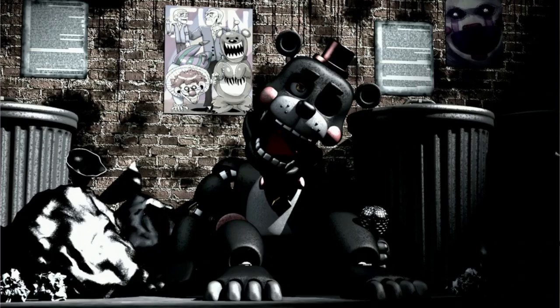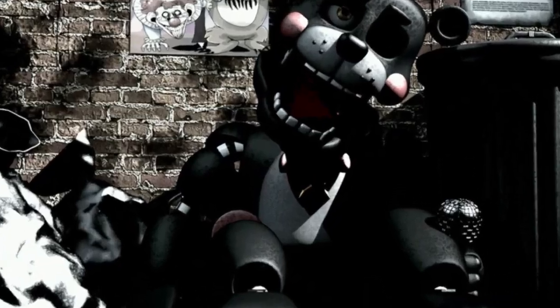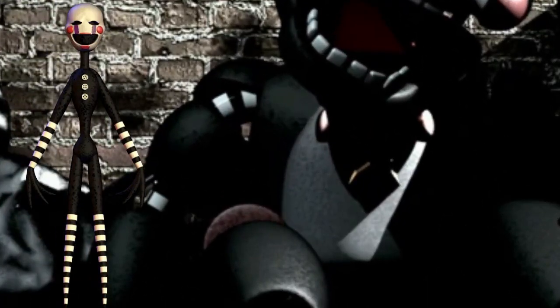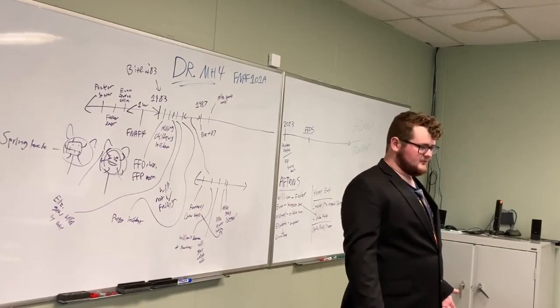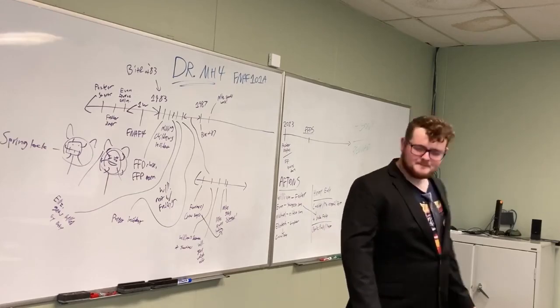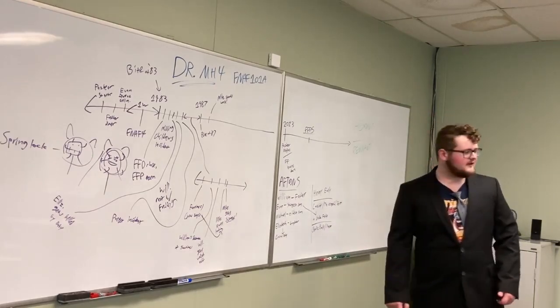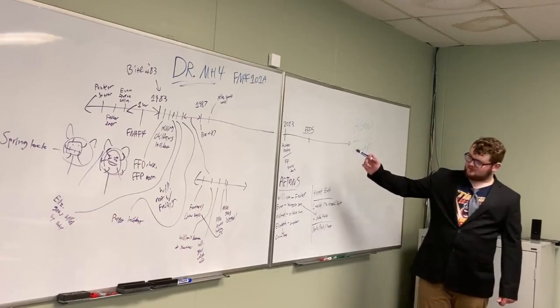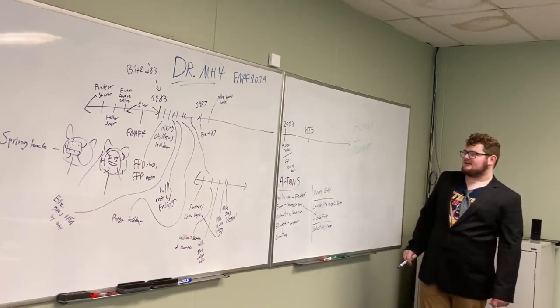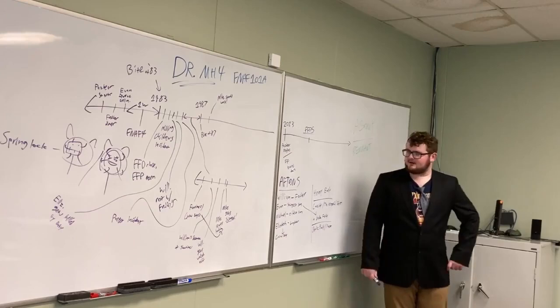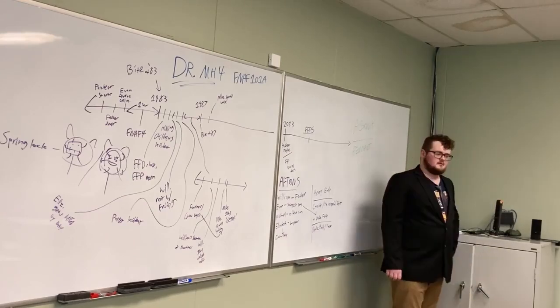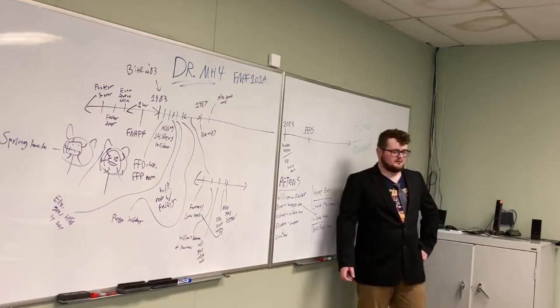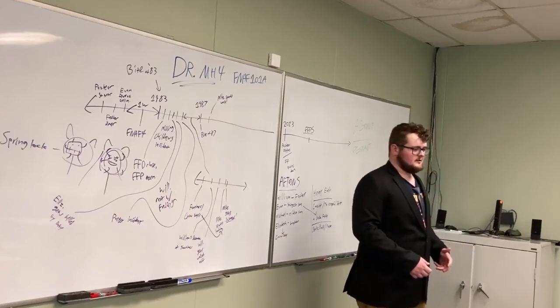If you achieve the best ending in Freddy Fazbear's Pizzeria Simulator, you get a monologue where Baby is saying, You dummy, you thought you lured us all here, but we lured you here so we can kill you. But then, Henry Emily, who is revealed to be your boss that you got the franchise from, interrupts Elizabeth and tells her, No, this was all part of my master plan.